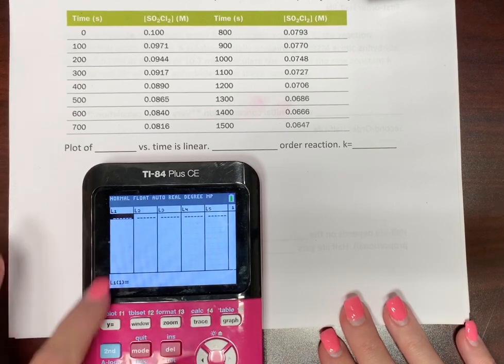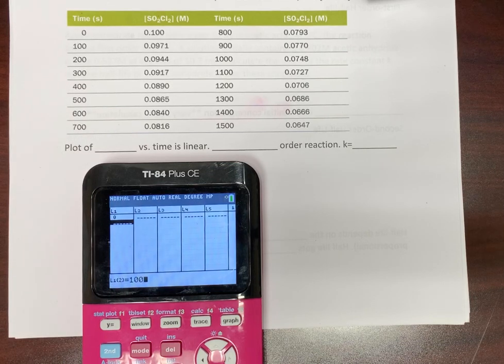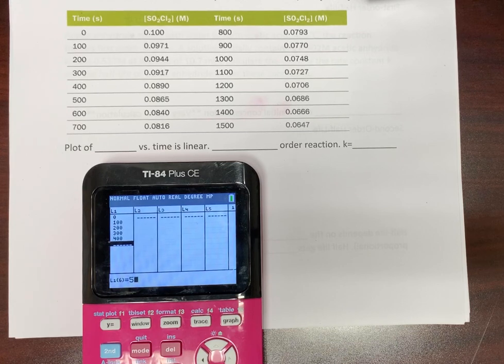Okay, so your first list, this is going to be all of your time values. Make sure you do enter time zero. So zero, 100, 200, 300, 400, 500. I know this gets tedious, but it's way better than doing it another way. 600.